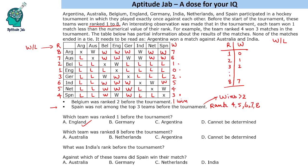Now we can answer the questions. Which team was ranked 8? Argentina was ranked 8 before the tournament. What was India's rank? India's rank is 6. Against which of these teams did Spain win their match? Spain won 3 matches — against Belgium, England, and Germany. Among the given options, Germany is the answer. This is the solution to the set and the answers to the questions.